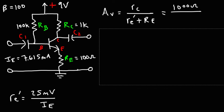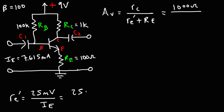Now that we have the value of IE, we can calculate the AC emitter resistance. It's 25 millivolts divided by 7.615 milliamps. So 25 divided by 7.615 gives us a resistance of 3.28, which we'll round to 3.3 ohms.